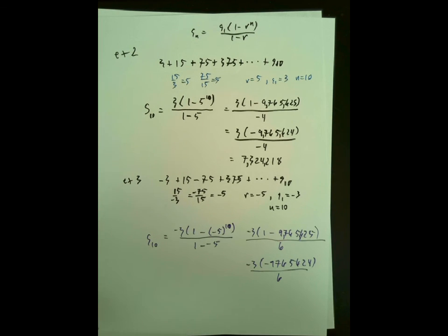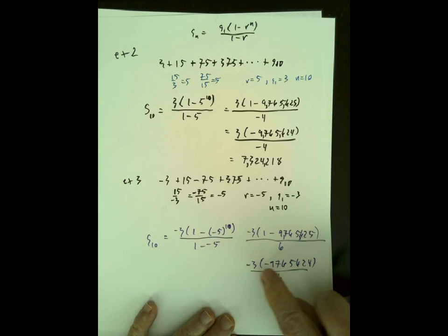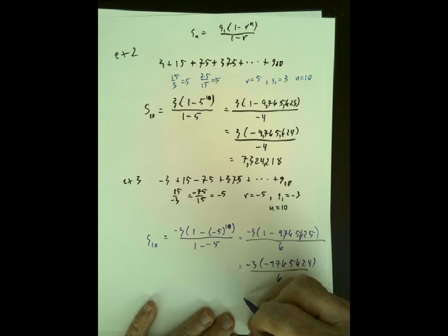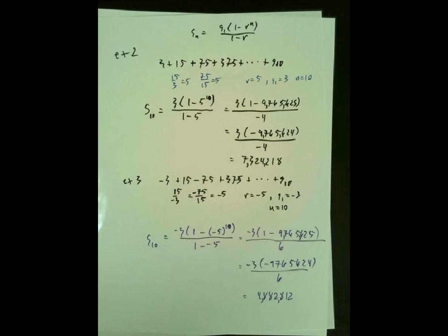Negative 5 to the tenth power is still 9,765,625 because it's an even exponent. The denominator is 1 minus negative 5 = 6. So we have negative 3 times negative 9,765,624 divided by 6. Negative times negative is positive, divided by positive 6, giving 4,882,812. Notice this sum is less than the previous one — that makes sense.